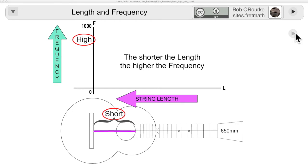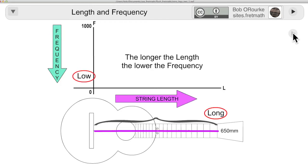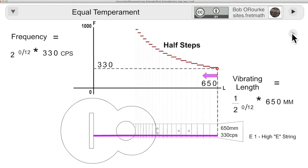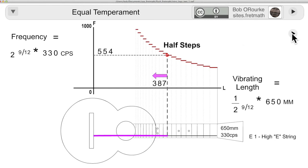String length is always the starting point for every stringed instrument. The shorter the string length, the higher the frequency. The longer the string length, the lower the frequency. On the guitar, the frets mark out the equal tempered scale. Each fret shortens the string length by 1 over the semitone ratio, that's the 12th root of 2, or 2 to the 1/12th, and raises the pitch or frequency by the same semitone ratio.